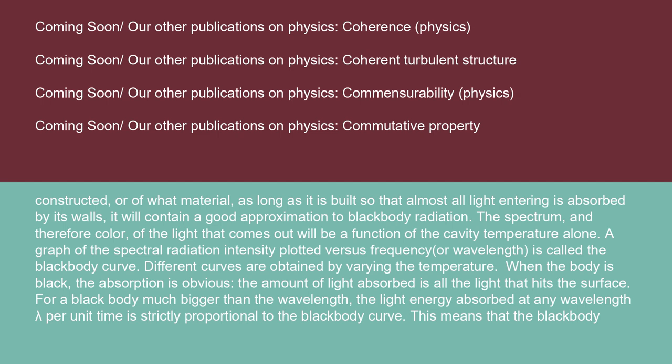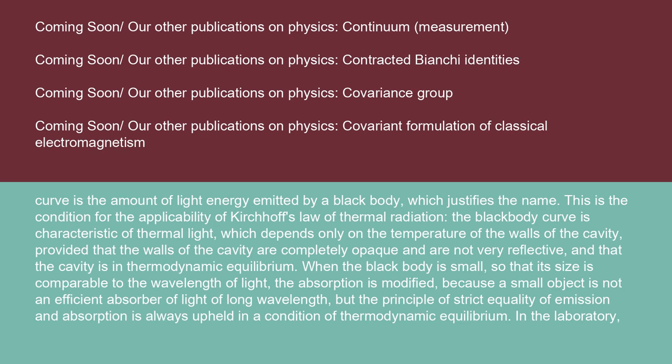A graph of the spectral radiation intensity plotted versus frequency or wavelength is called the black body curve. Different curves are obtained by varying the temperature. When the body is black, the amount of light absorbed is all the light that hits the surface. For a black body much bigger than the wavelength, the light energy absorbed at any wavelength lambda per unit time is strictly proportional to the black body curve, which means the black body curve represents the amount of light energy emitted by a black body.